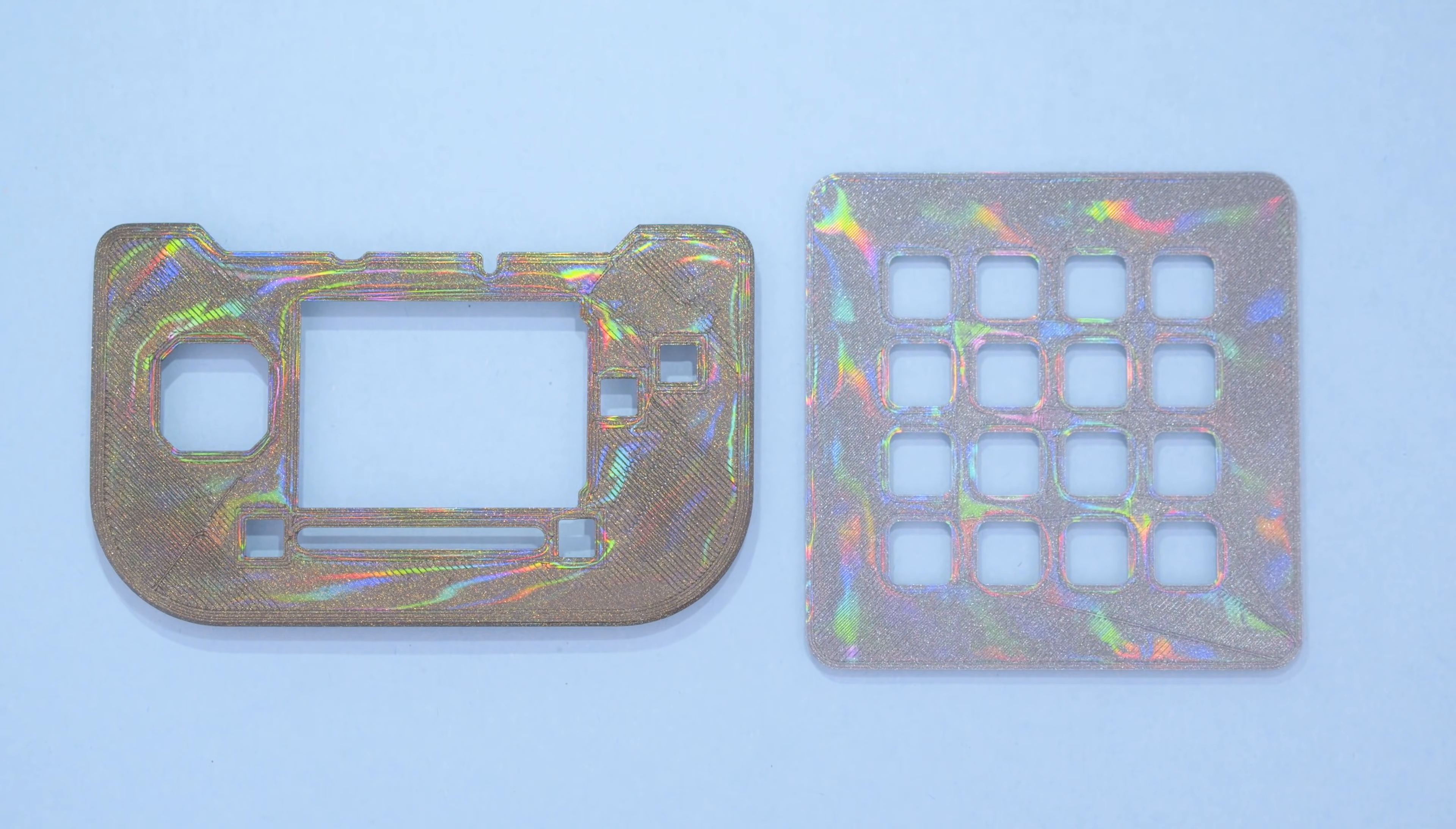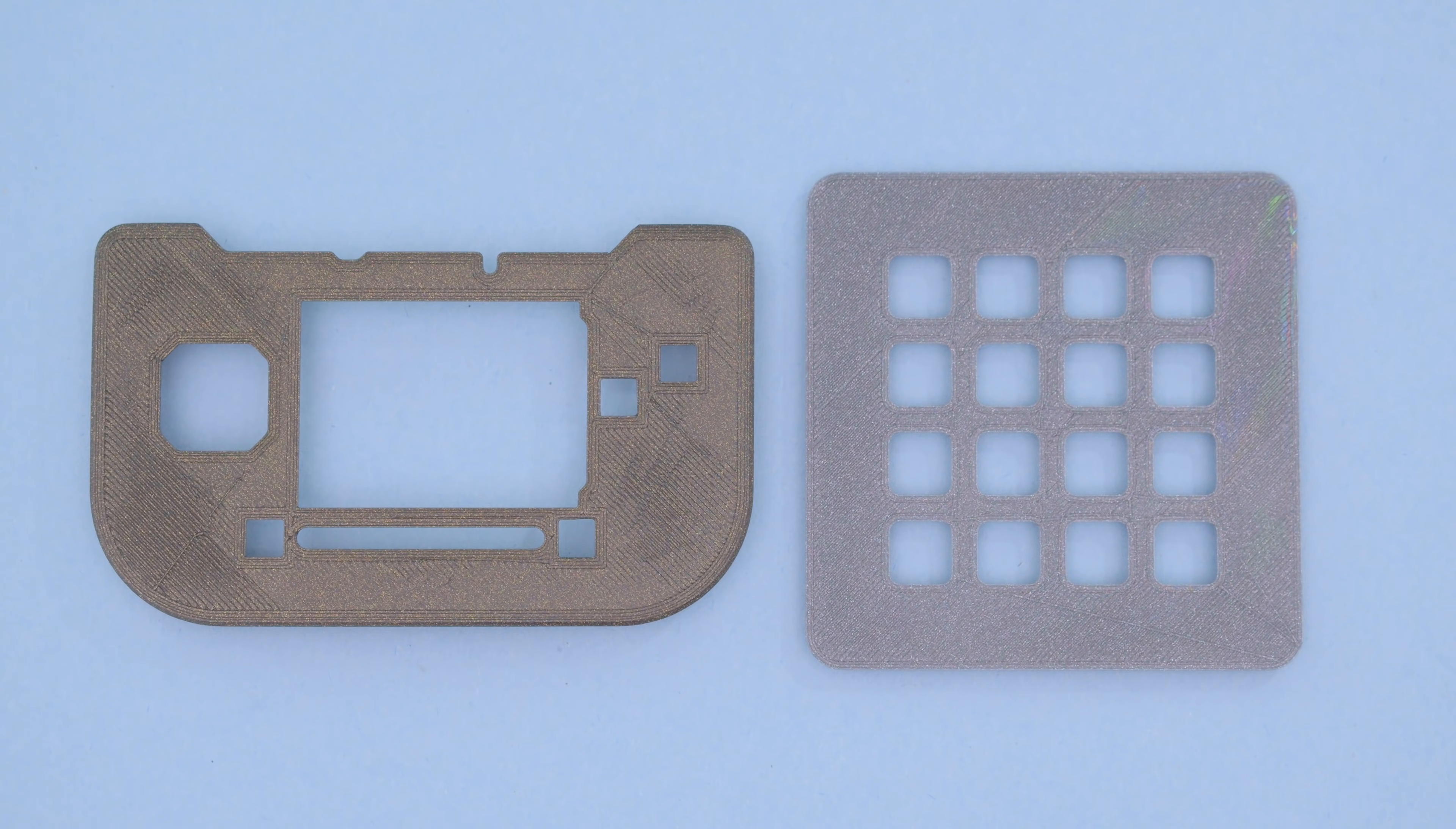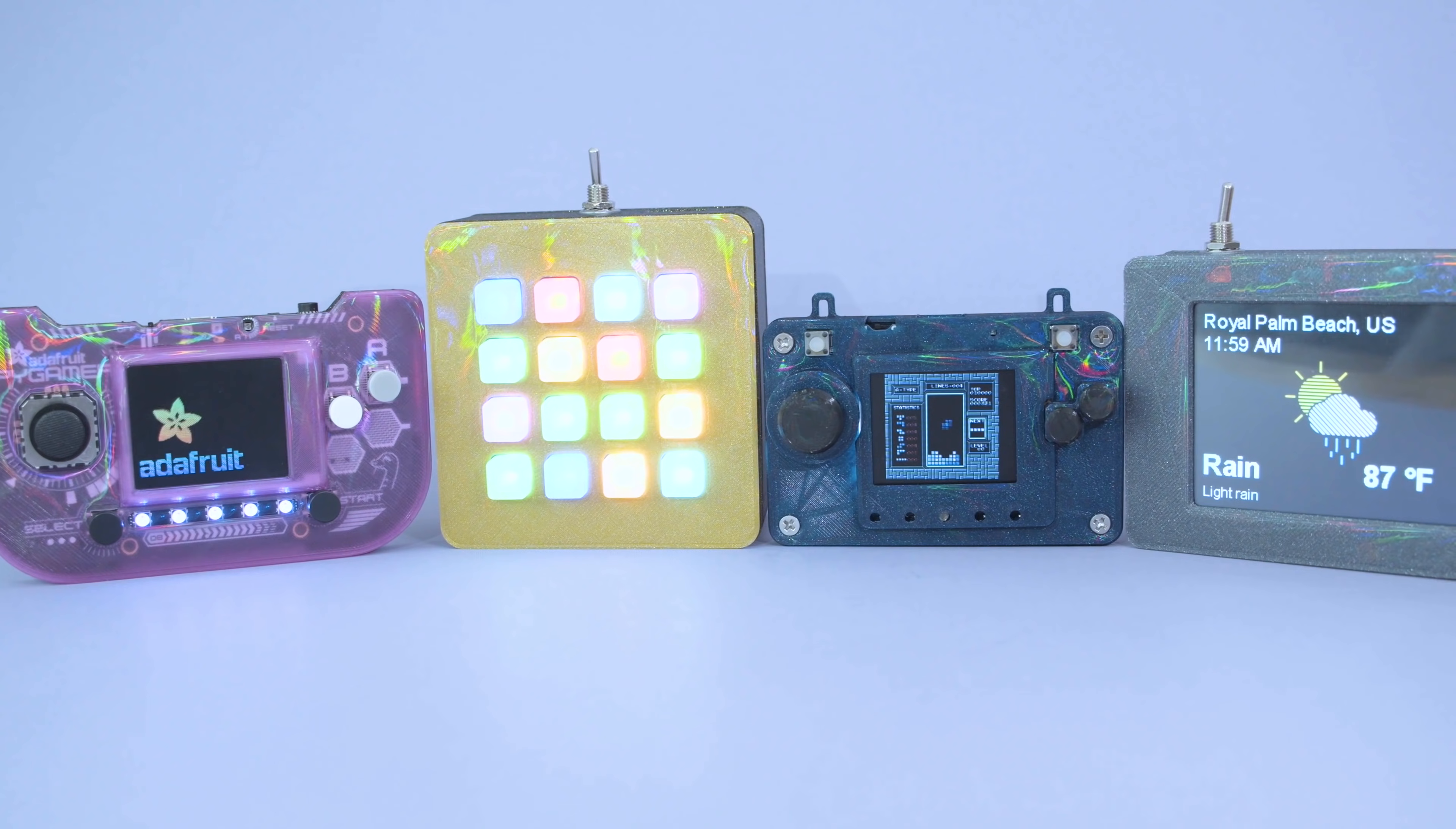You can get shiny rainbow-like surfaces on the bottom of your 3D prints by printing on a special sheet. In direct sunlight, reflections look iridescent with rainbow-like patterns.